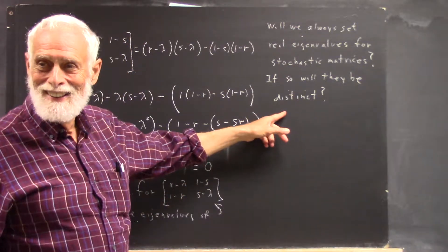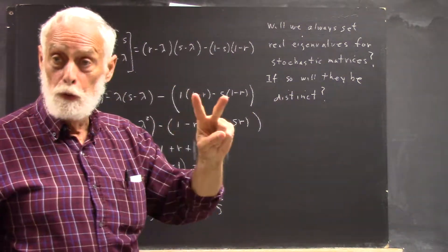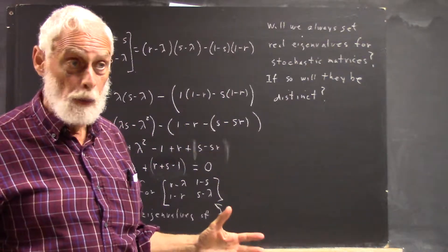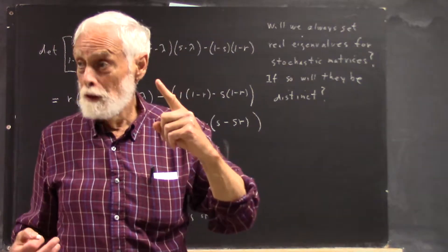Okay, distinct means that you've got two of them, not one repeated root twice, right? Because when you solve a quadratic equation, if the discriminant is zero, you have just one solution, right?